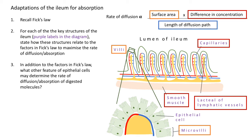Finally, the length of diffusion path. What you should have identified is that the ilium is made of just a single epithelial cell layer — it is only one cell thick — so there is a short diffusion path from the lumen of the ilium into the blood.